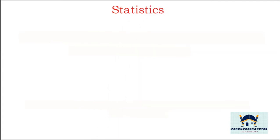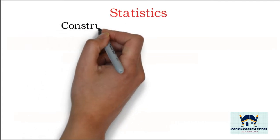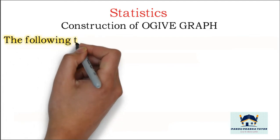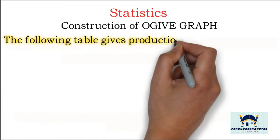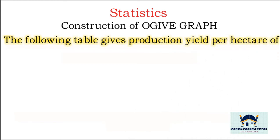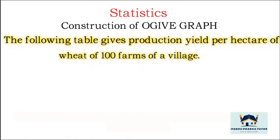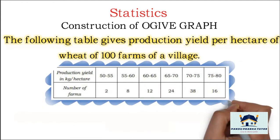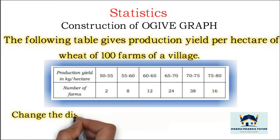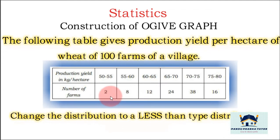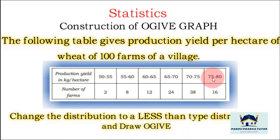Namaste viewers, statistics construction of ogive graph. In this video we will take one question. The following table gives production yield per hectare of wheat of hundred farms of a village. Class interval and frequencies are given. You have to convert that frequency to less than type distribution then draw ogive graph.